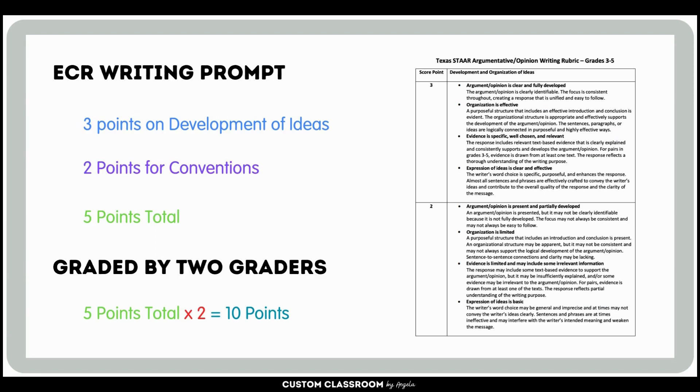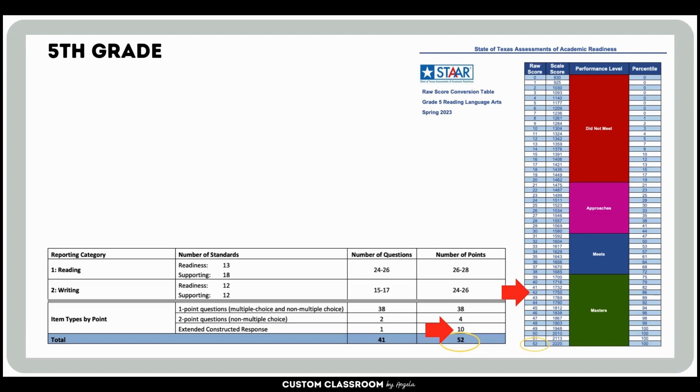On a side note, the ECR writing prompt is graded on a rubric where 3 points are from Development of Ideas and 2 points are for Conventions, totaling 5 points. Then they are graded by 2 different graders, so you multiply that by 2 and it equals a total of 10 points. Now let's look at the raw score.